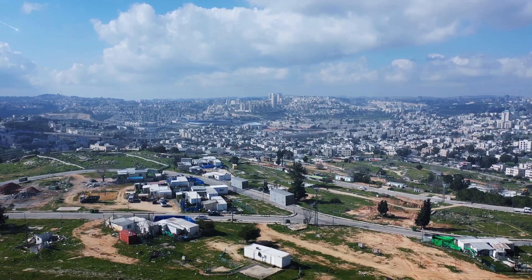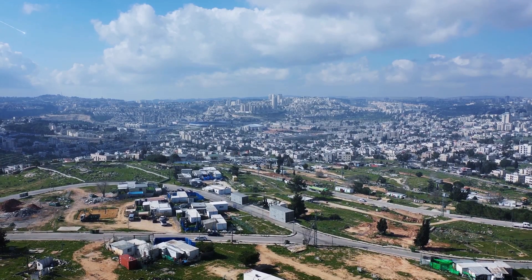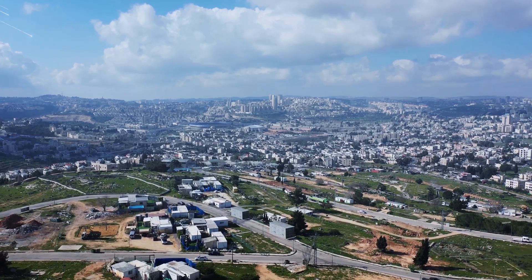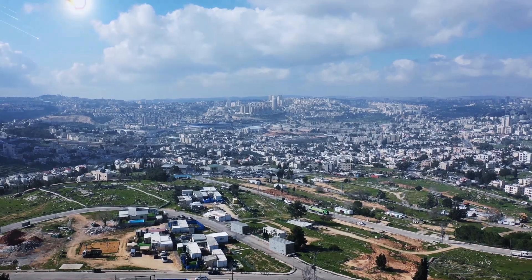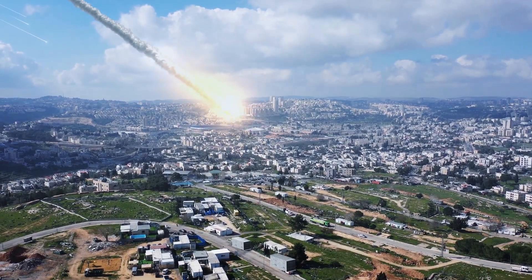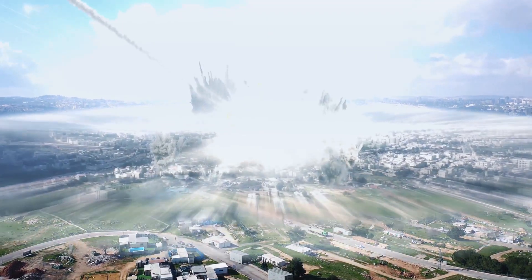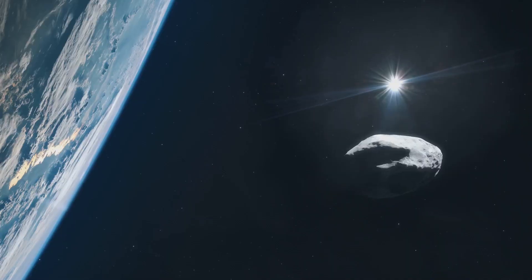Now here's the kicker. While 2007 FT3 might not be the largest asteroid out there, the potential impact in 2024 could unleash an energy equivalent to a mind-boggling 2.6 billion tons of dynamite. That's no small amount, folks.